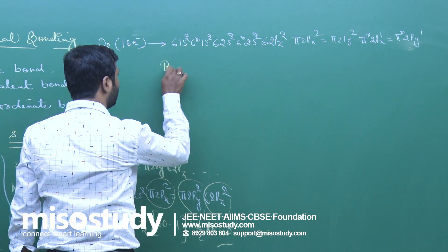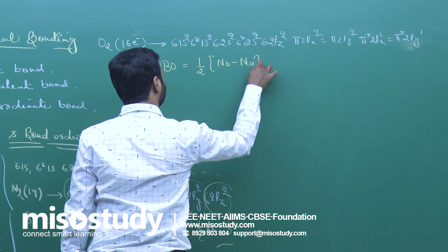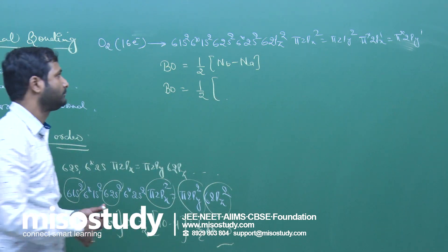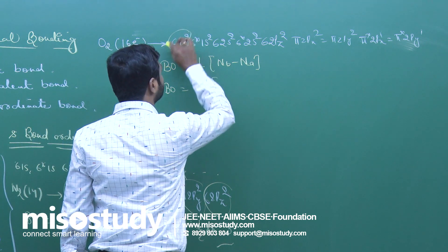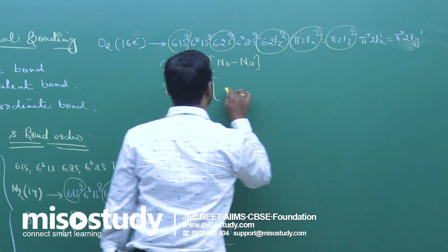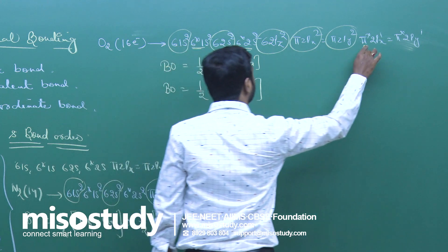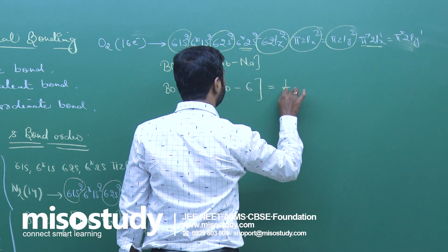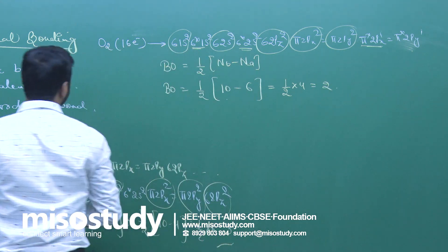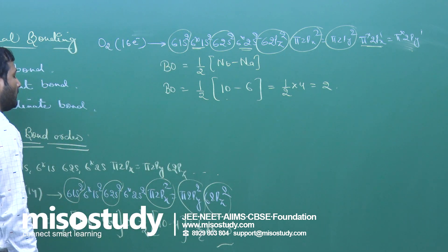What will be the bond order? Bond order = ½ × (NB − NA). Bonding electrons: σ1s² + σ2s² + σ2pz² + π2px¹ + π2py¹ = 10. Anti-bonding electrons: σ*1s² + σ*2s² + π*2px¹ + π*2py¹ = 6. Bond order = ½ × (10 − 6) = ½ × 4 = 2. Similarly, you can write the electronic configuration of O2+, O2⁻ — this is generally MOT theory.